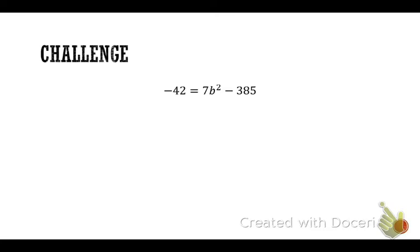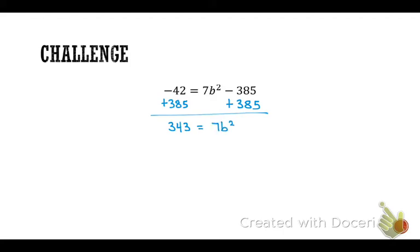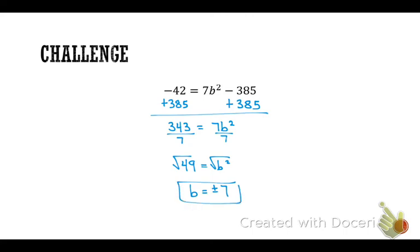We've got a challenge question! Step one — add 385 to both sides. What's negative 42 plus 385? 343 equals 7b squared. Now divide by 7 — it actually wasn't that difficult, it just seemed difficult. 49 equals b squared. Square root it — b equals positive-negative 7. And that'll be it for section 9.1.